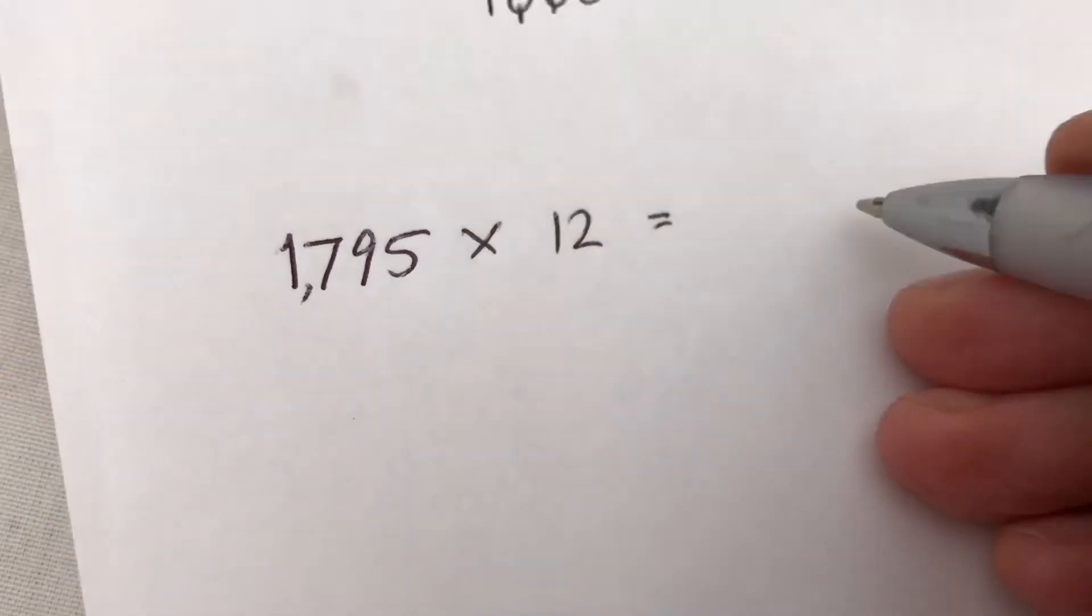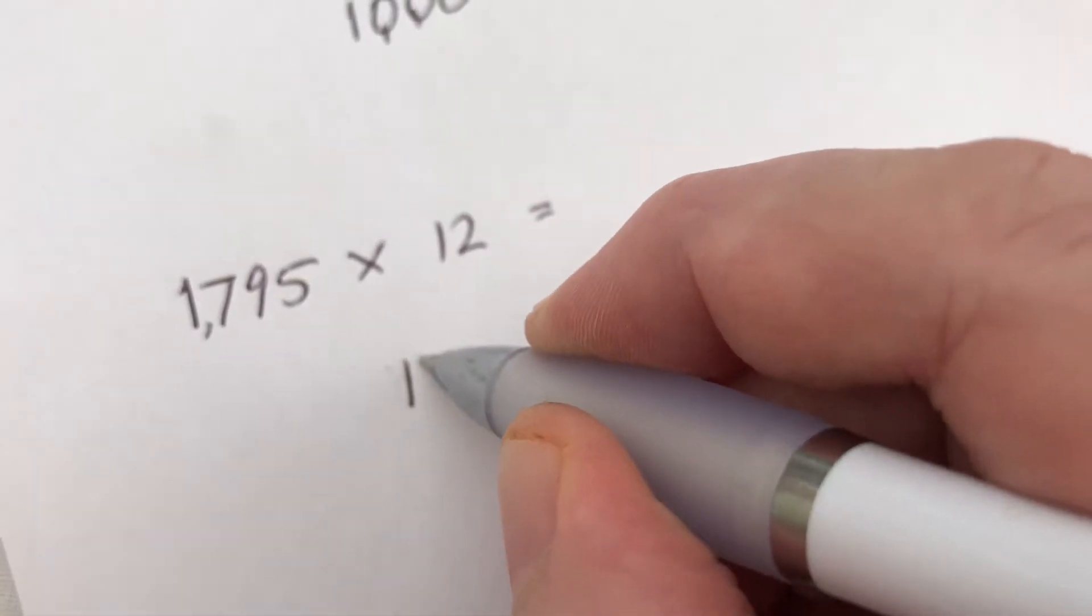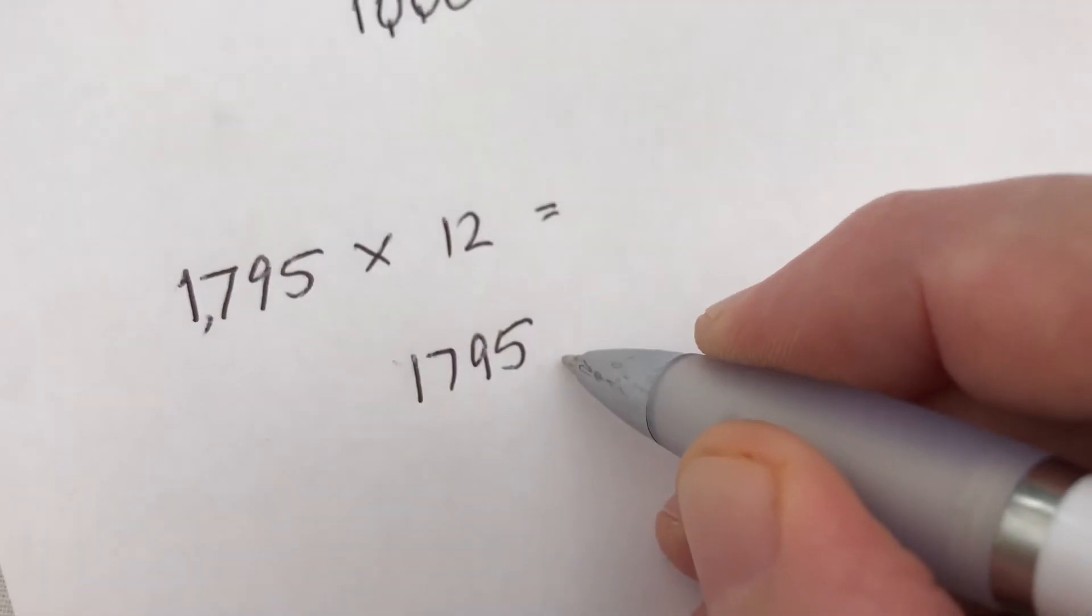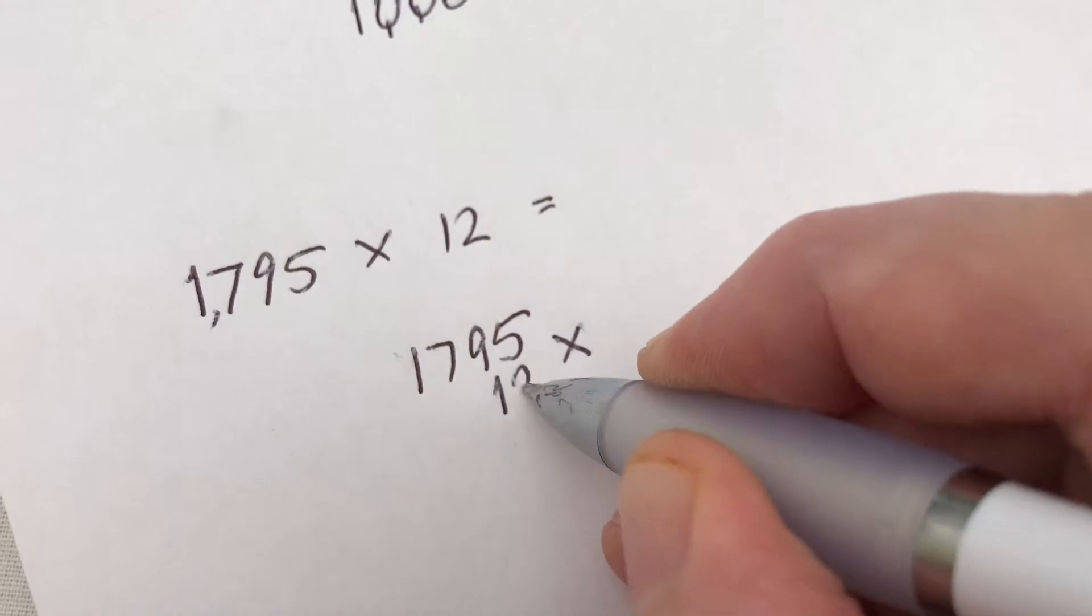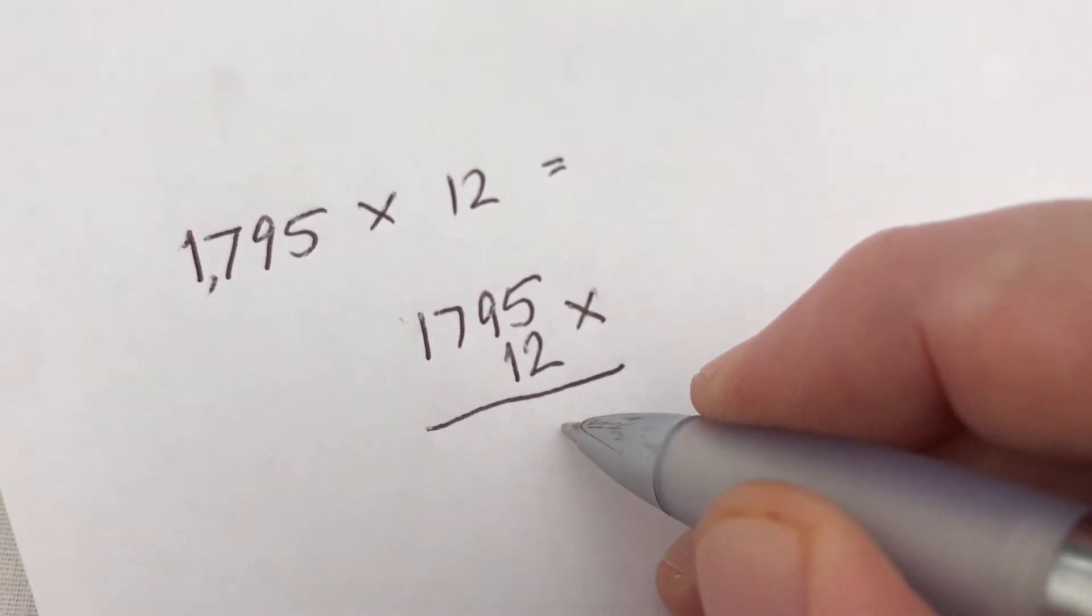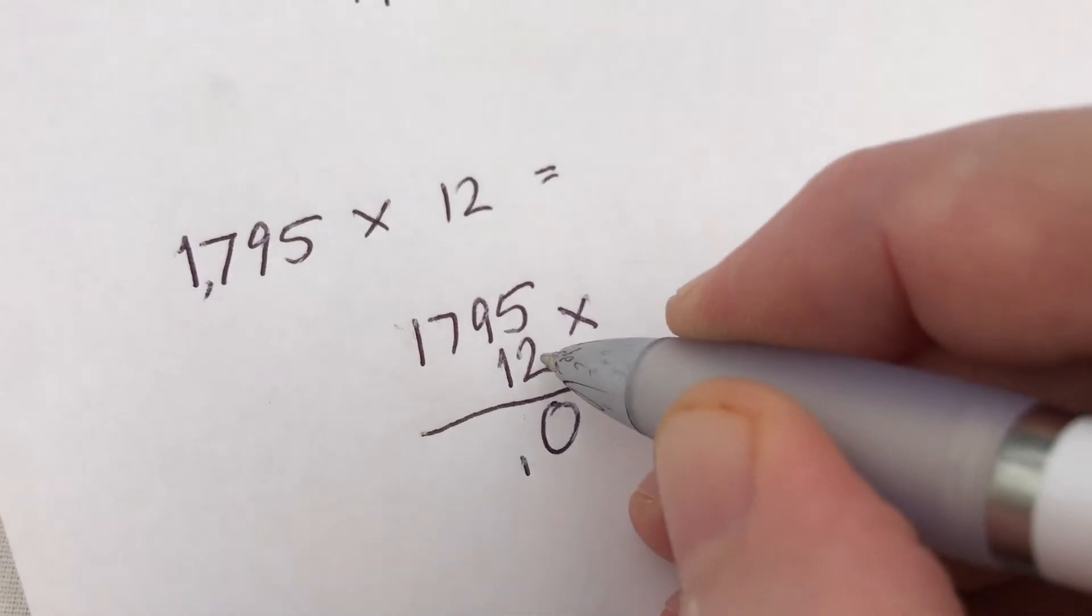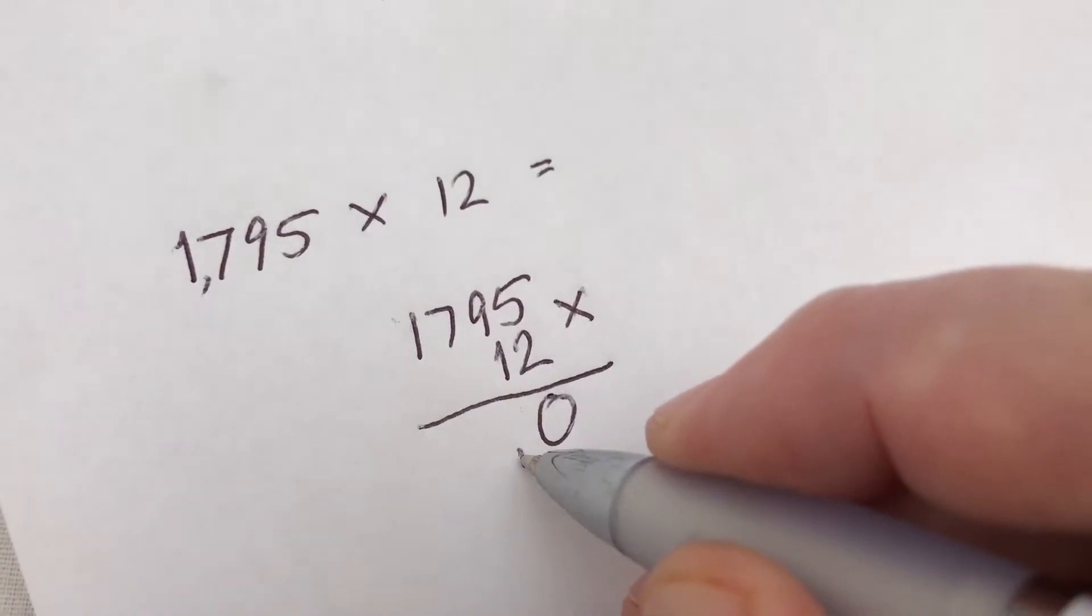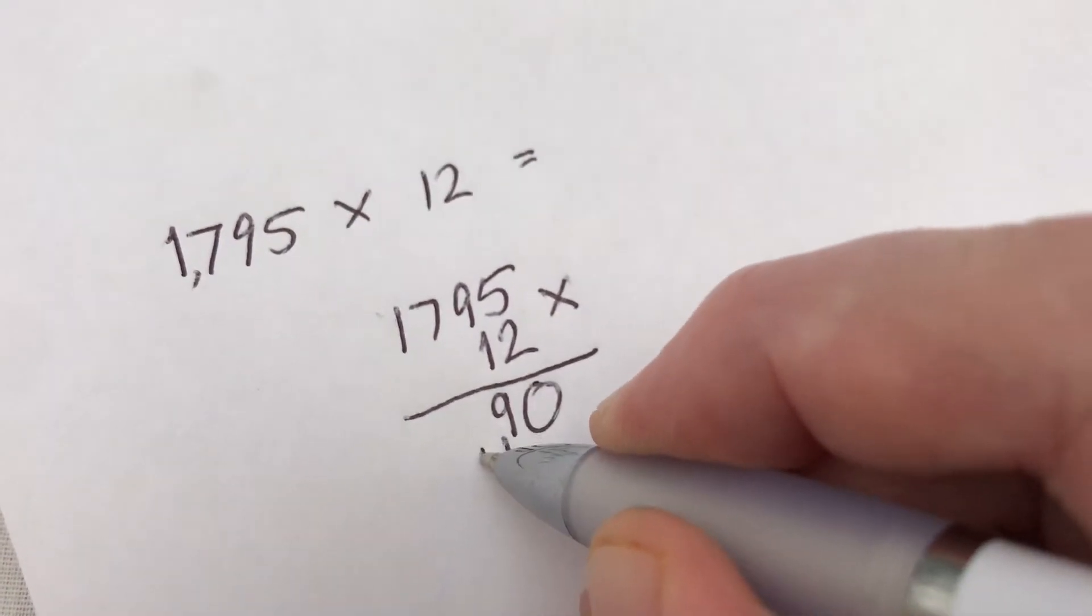1,795 multiplied by 12. So again, using the units and the way in which we like to lay them out, 1,795 multiplied by 12, keeping the units correct. 2 times 5 is 10, so put down the 0, carry the 1 as we did before. 2 times 9 is 18, plus the 1 is 19. Put down the 9, carry the 1.